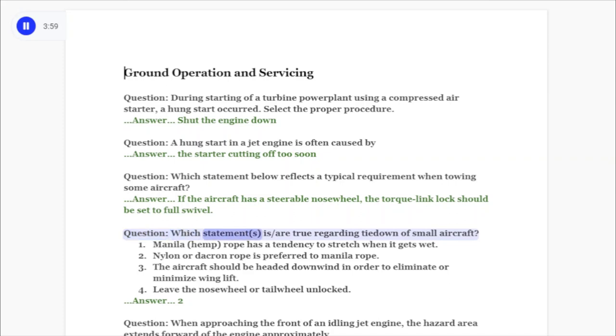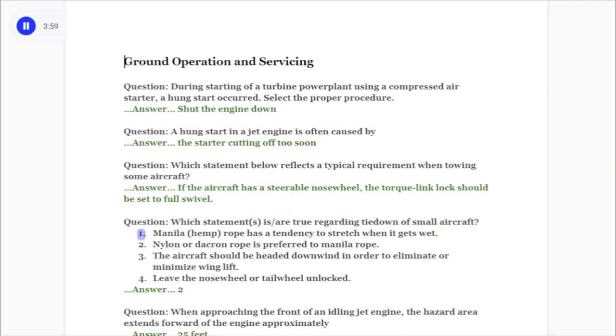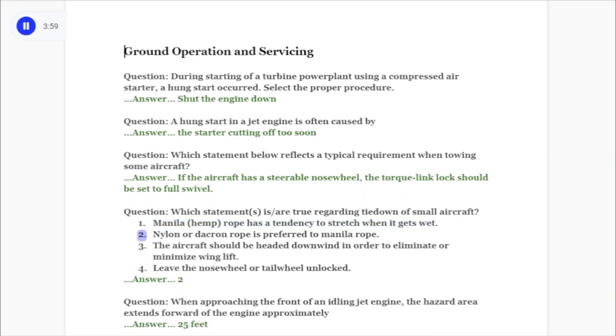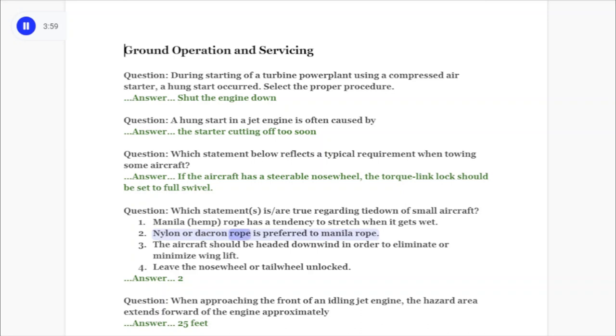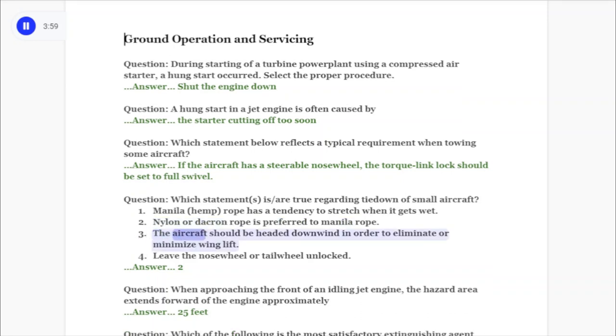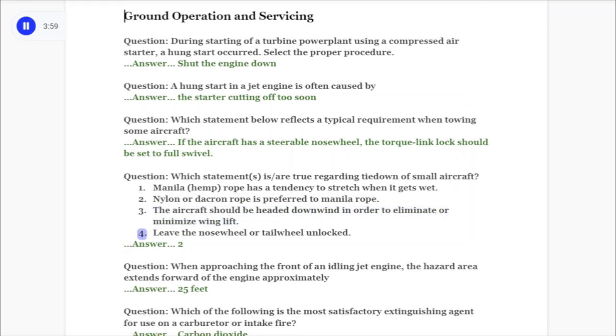Question: Which statements are true regarding tie-down of small aircraft? One: Manila hemp rope has a tendency to stretch when it gets wet. Two: Nylon or Dacron rope is preferred to manila rope. Three: The aircraft should be headed downwind in order to eliminate or minimize wing lift. Four: Leave the nose wheel or tail wheel unlocked. Answer: Two.